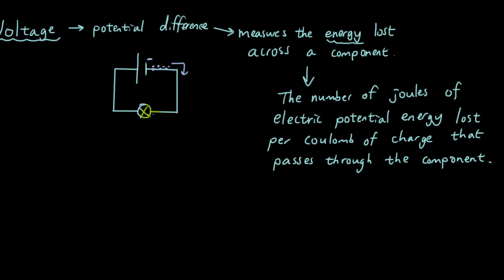So the number of joules of energy that is lost per coulomb of charge that passes through the light bulb is the voltage. So this is the voltage: V equals the number of joules of energy that is lost for every coulomb of charge that passes through the light bulb.